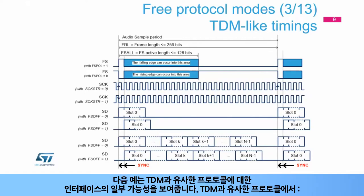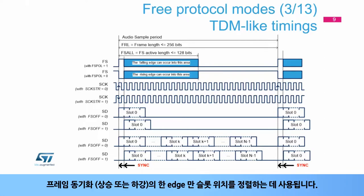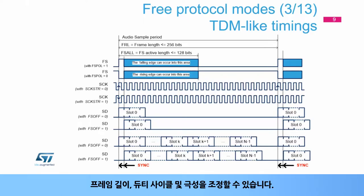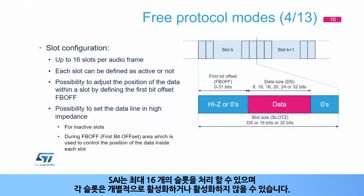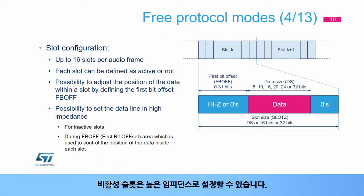The following example shows some of the possibilities of the interface for TDM-like protocols. In a TDM-like protocol, only one edge of the frame synchronization, rising or falling, is used to align the slot's position. The frame length, the duty cycle, and polarity can be adjusted. The clock data strobe edge can be selected. The position of the slots with respect to the frame active edge can be selected. The size of the slots can also be adjusted, with up to 16 slots per frame. The SAI is able to handle up to 16 slots, and each slot can be individually activated or not. The inactive slots can be set in high impedance. The slot size is always larger than or equal to the data size.